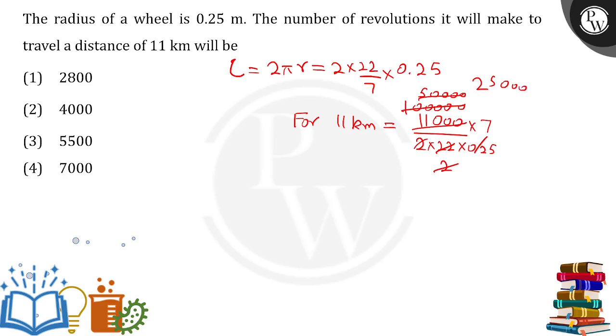Now we're left with 25 in the denominator and 25 in the numerator pattern, simplifying through the steps. In total, we get 7000. 7000 revolutions would be required to cover the distance of 11 kilometers.